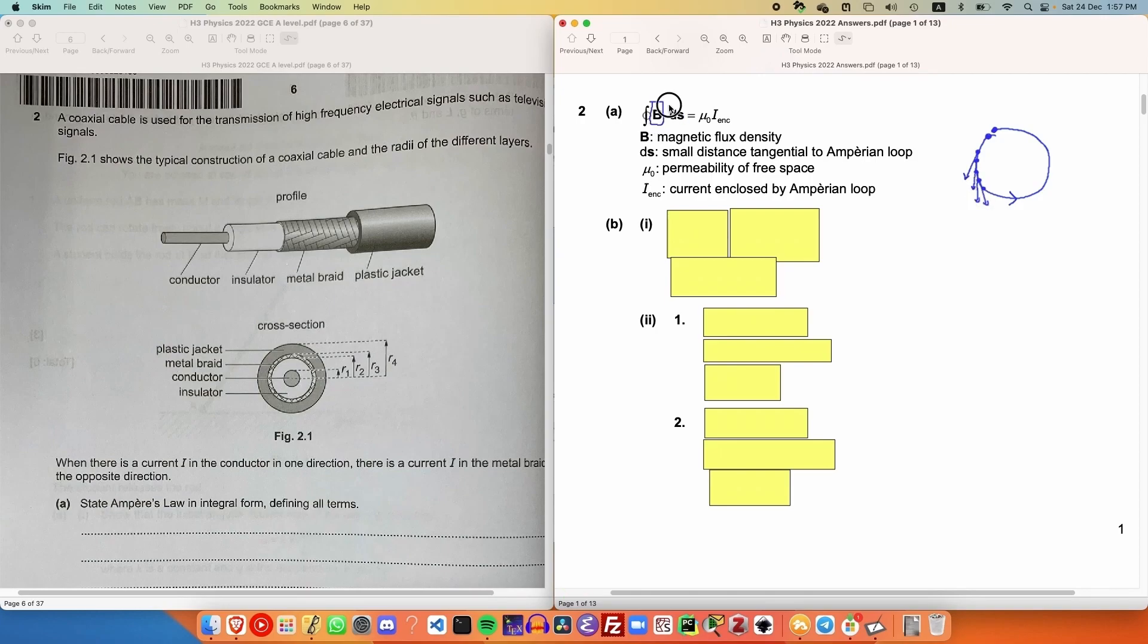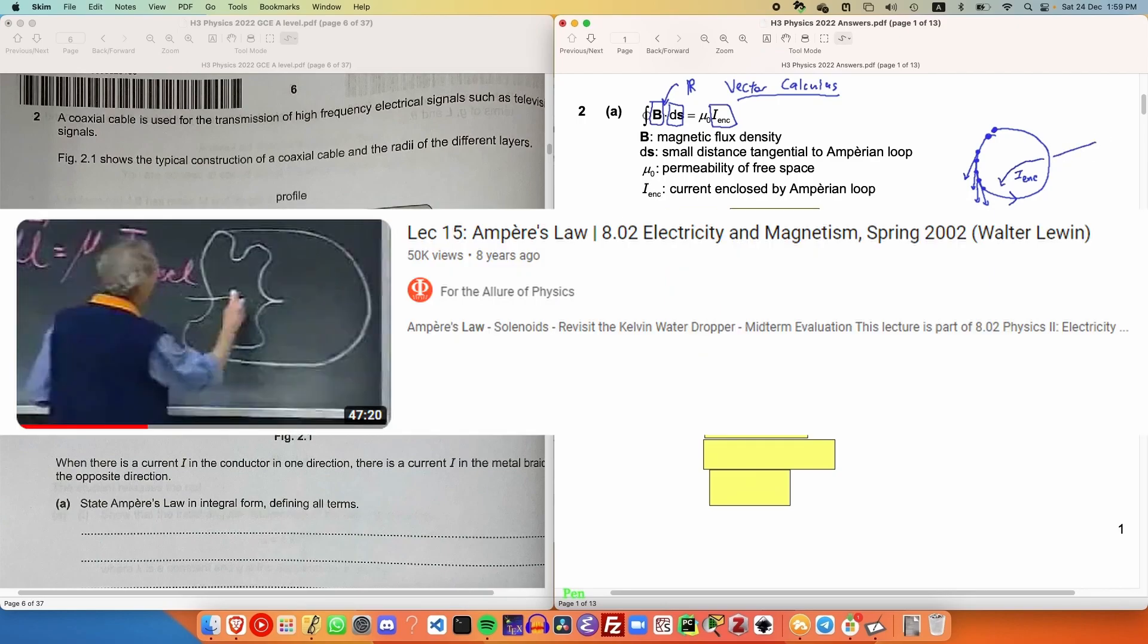Because B is a vector and ds is also a tangent vector, the dot product would yield a real number. This real number would then be integrated along a parameterization of the loop. The details of line integrals goes into vector calculus. And personally, I recommend studying vector calculus if you want to truly understand electromagnetism. I enclose is simply the amount of current that is penetrating through this Ampere loop. Walter Lewin has a great video on this, which I'll display over here.